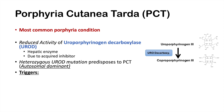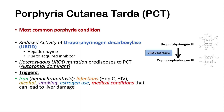Some triggers that can lead to inhibition of uroporphyrinogen decarboxylase include iron — having hemochromatosis or iron overload can lead to reduced activity of the enzyme and onset of PCT. Others include infections like hepatitis C and HIV. Additional triggers include alcohol, smoking, estrogen use, and other medical conditions that can lead to liver damage, such as non-alcoholic fatty liver disease.